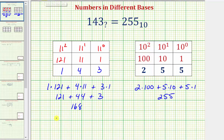So 143 in base 11 is equal to 168 base 10, but we want 255 base 10, not 168 base 10, which means the base is going to be larger than base 11.